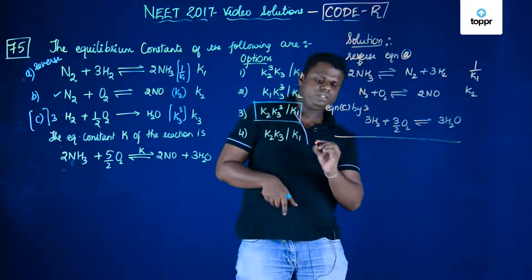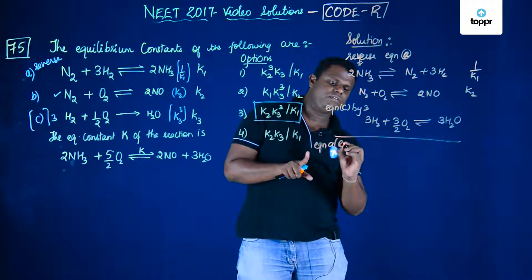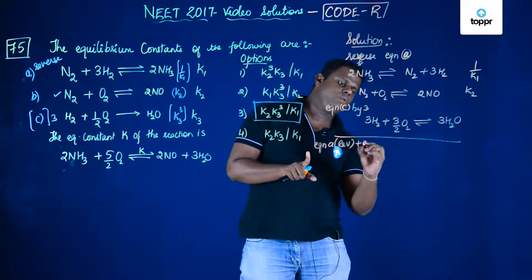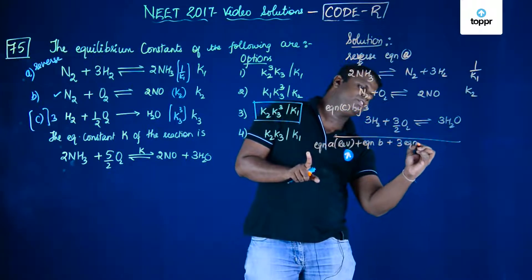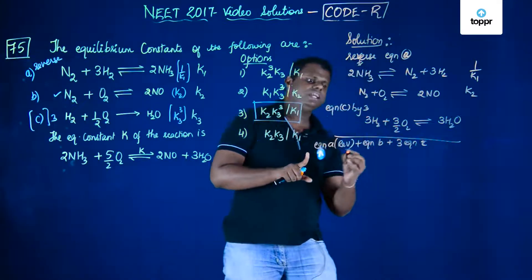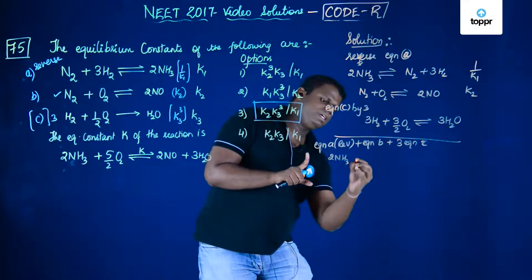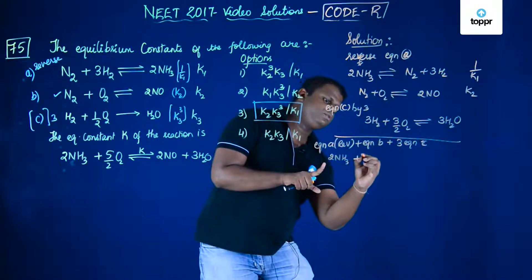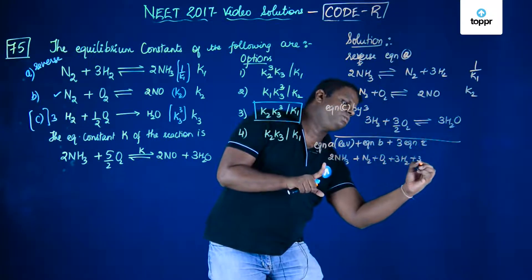Now if we add everything, this is equation A that is reversed plus equation B plus 3 times equation C. What exactly do you get? You get 2NH3. Let's write these down. So 2NH3 plus N2 plus O2 plus 3H2 plus 3/2 O2.